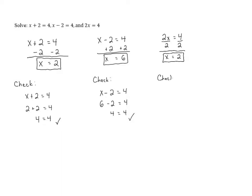Let's check this one as well. The original equation was 2x equals 4. We decided that x was 2, so I'm going to substitute in 2 for x. We know 2x is 2 times x, so this is going to be 2 times 2 on the left. When we multiply 2 times 2, we get 4. And since 4 is equal to 4, we know that this is the correct answer.